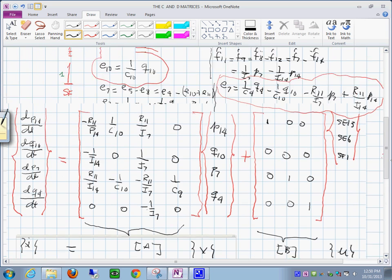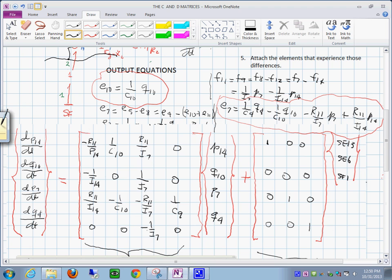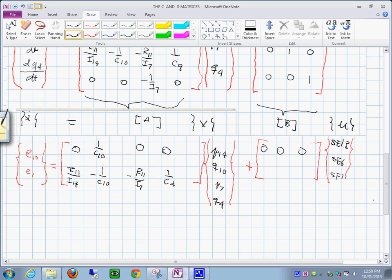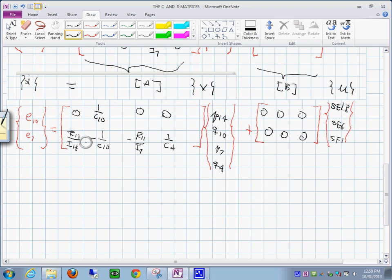Now here, E7 has terms in all four of them. The first one is P14 which is R11 over I sub 14. Then the term on Q10 is minus 1 over C10. And then you have the other term about P sub 7, which is minus R11 over I7. And then you have Q sub 4, which is 1 over C sub 4.